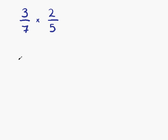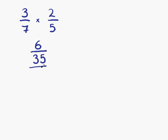So if we're going to multiply these, it's just a case of multiplying the numerators: 3 times 2, which is 6, and then the denominators: 7 times 5, which is 35. Can we simplify this fraction? Well, the answer is also no, so 6 over 35 is our final answer.